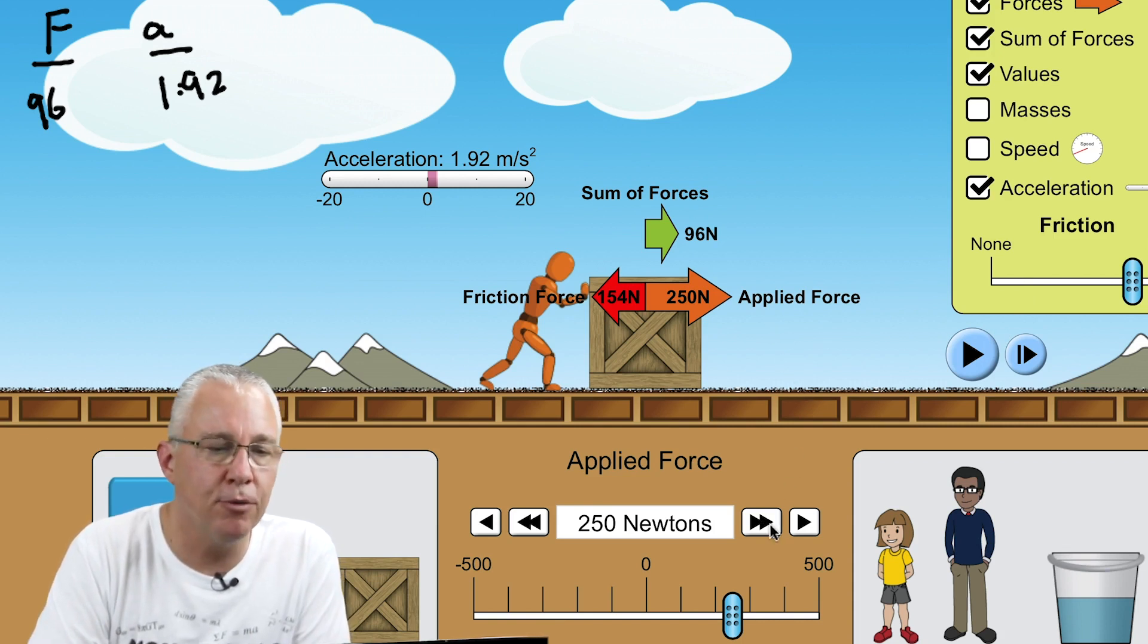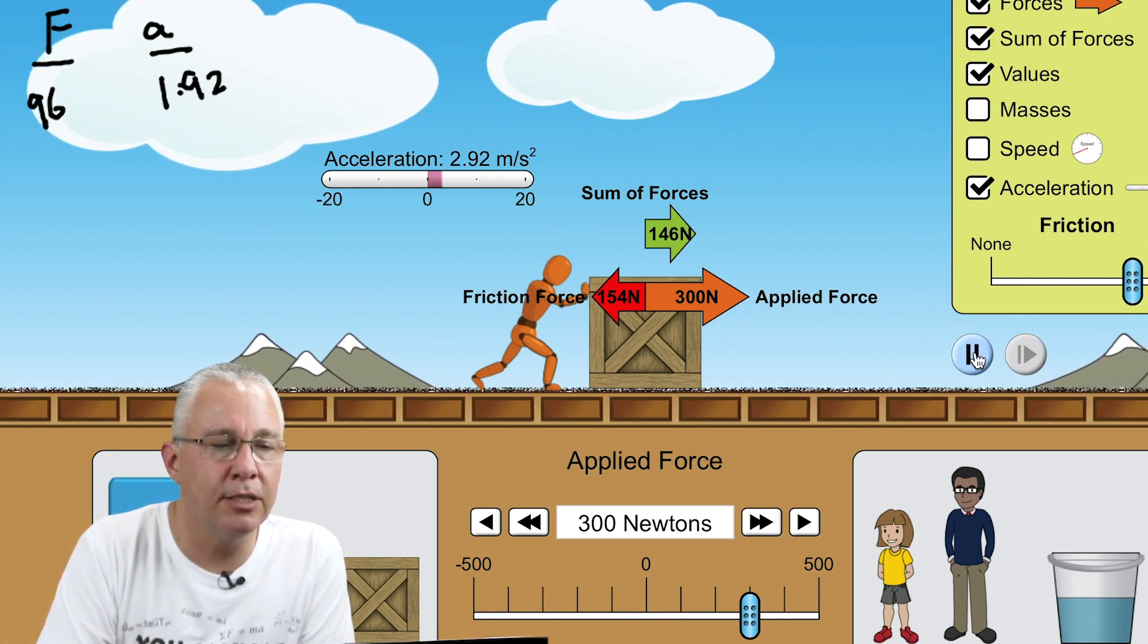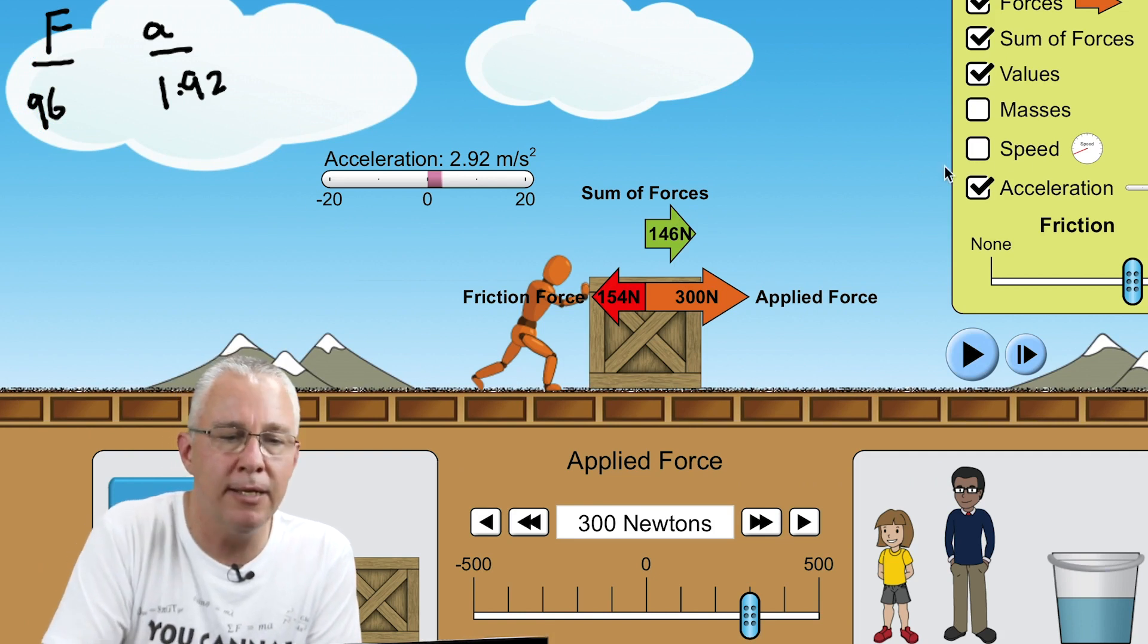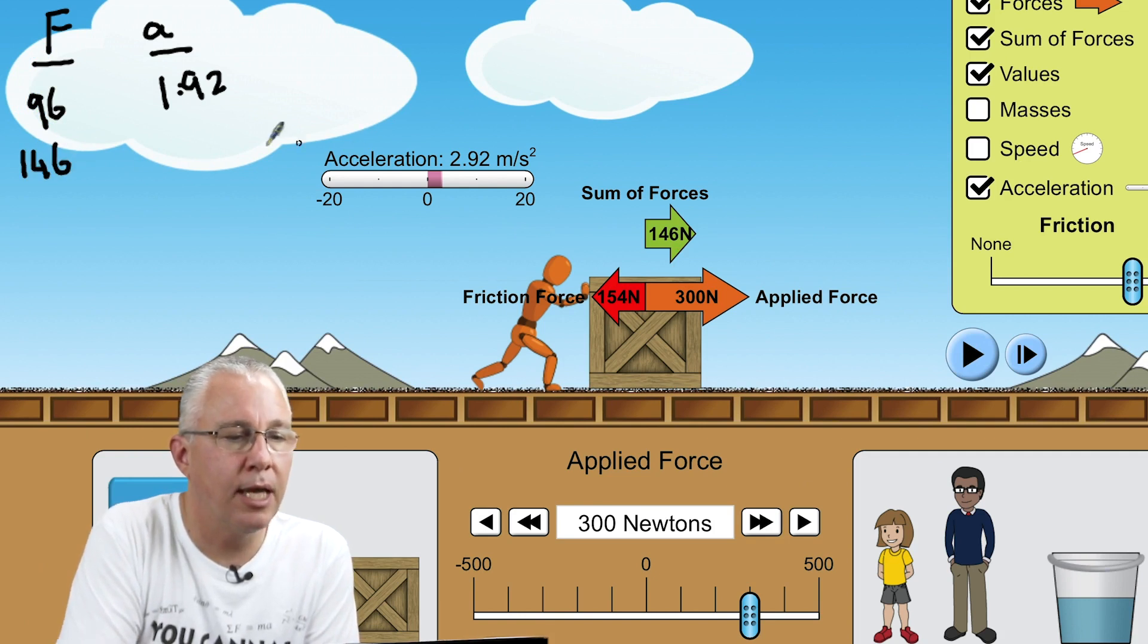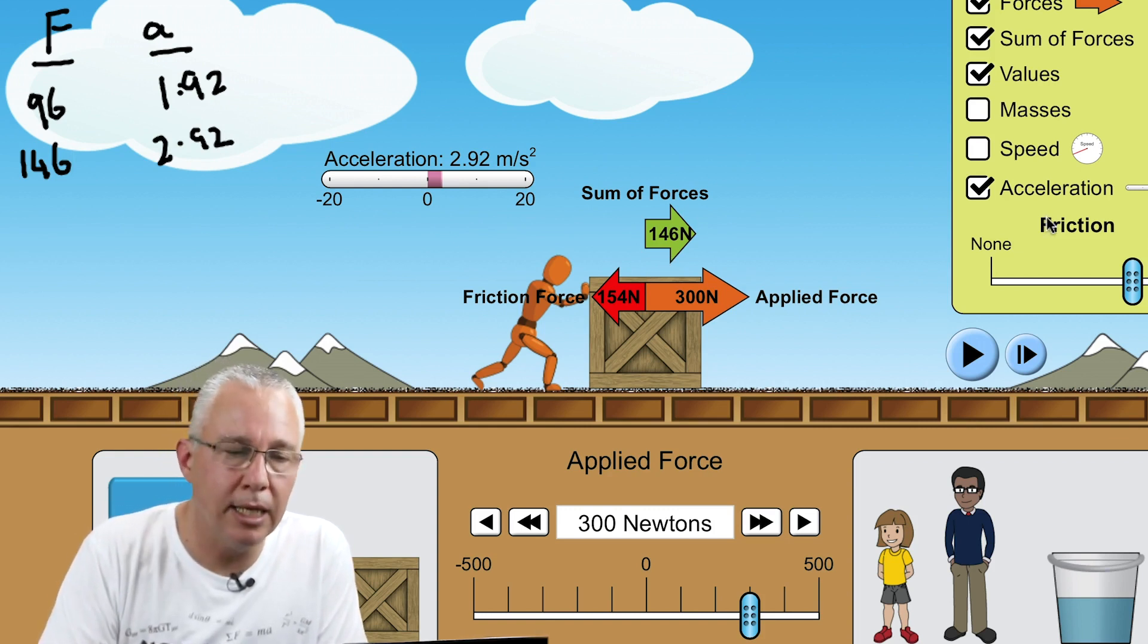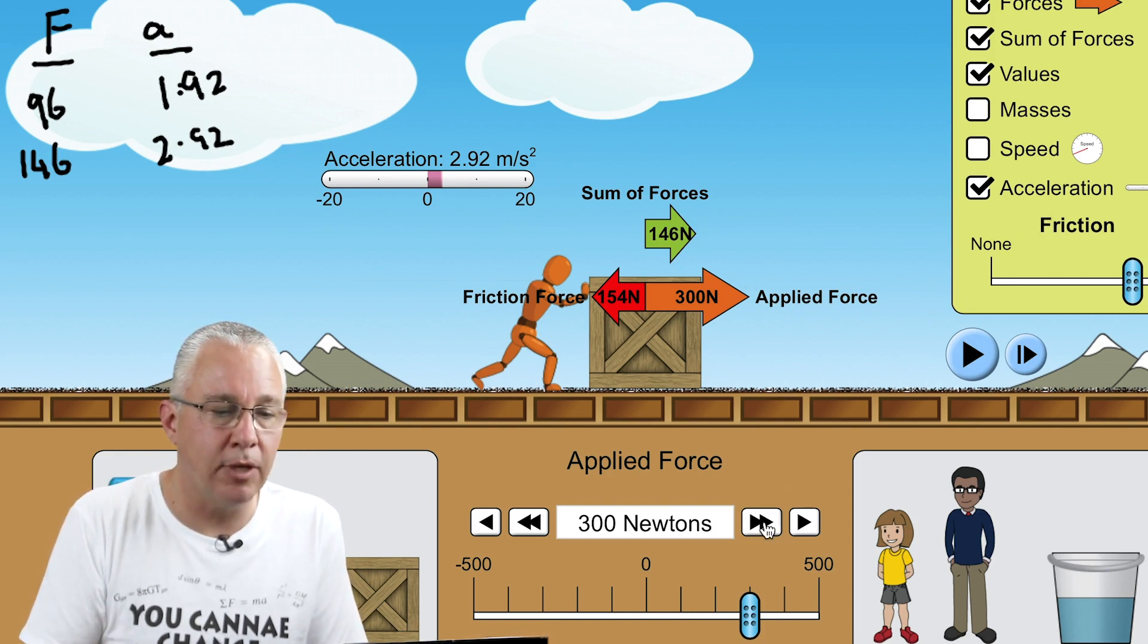Now let's apply a greater force. So we're going to increase the applied force to 300. So now it's going to accelerate at a greater rate. Notice now that the net force is bigger. We now have 146 and we have now the acceleration of 2.92.